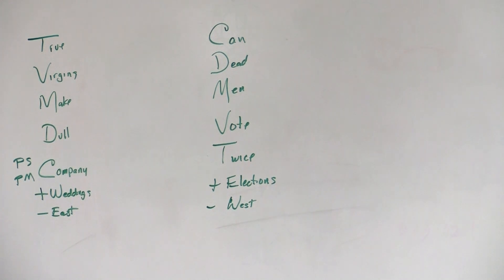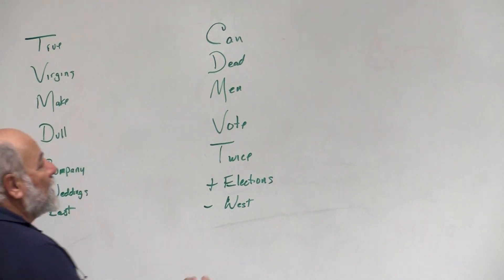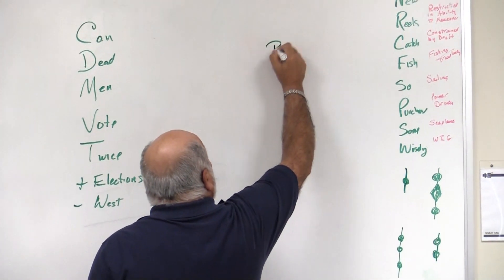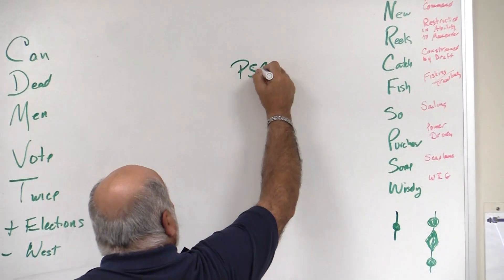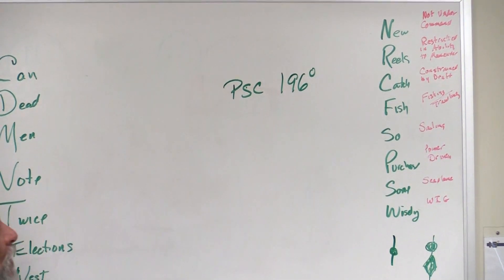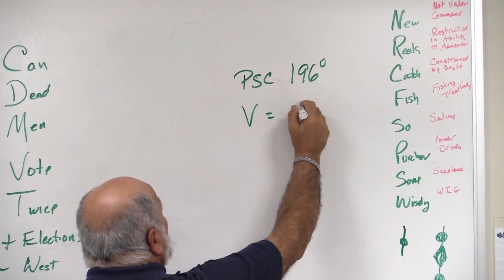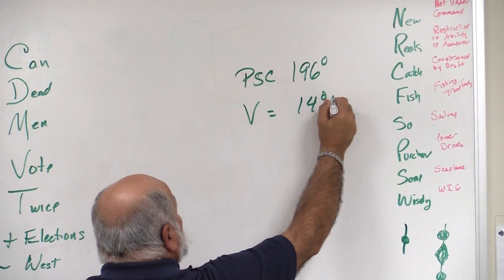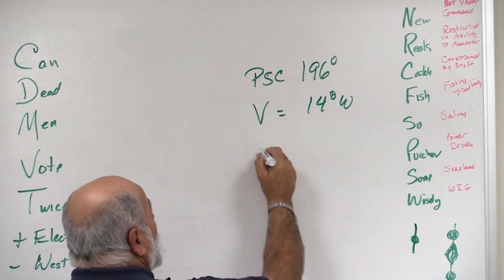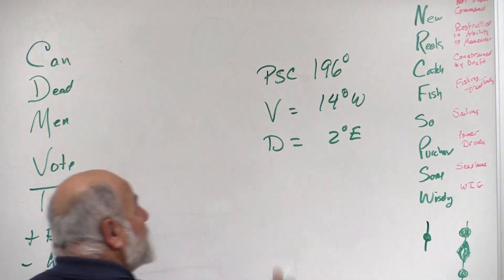Now, if we were given a compass heading and variation and deviation, we would plug them in accordingly. Let's say that the question said that we are going to travel on per ship's compass heading of 196 degrees, and they want to know what is the true heading. Variation for the area equals 14 degrees west, that's a given, it's on the chart. Deviation table, we find out that we have a 2 degree easterly deviation.